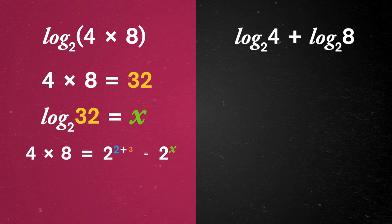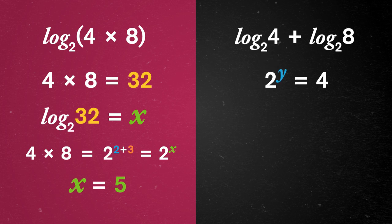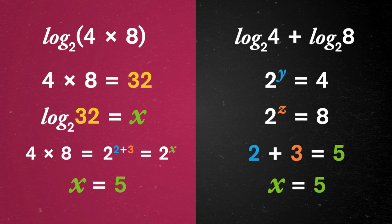Well, 4 is 2 squared and 8 is 2 cubed, so 32 is 2 to the 2 plus 3, the 5th power. On the other side, these terms are asking, what power of 2 equals 4 and what power of 2 equals 8? And again, we have 2 plus 3 equals 5.